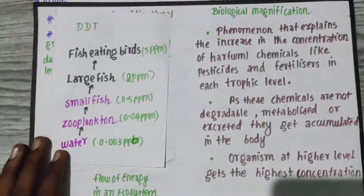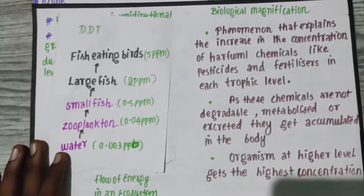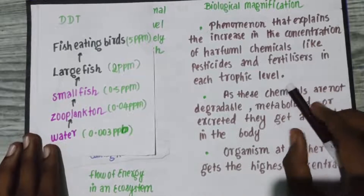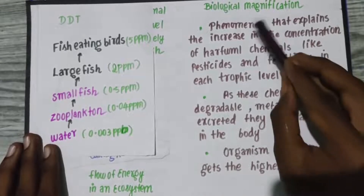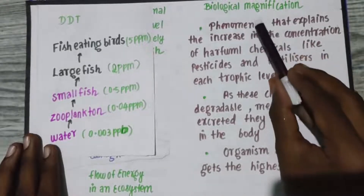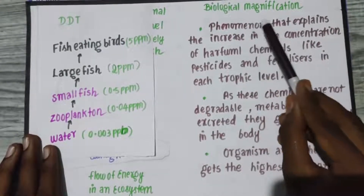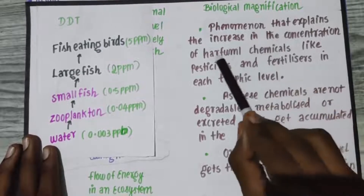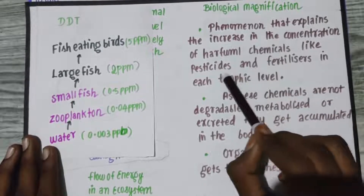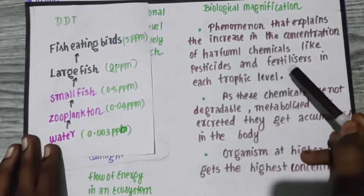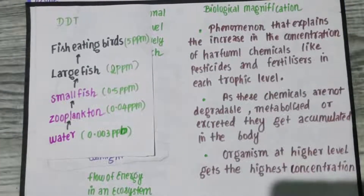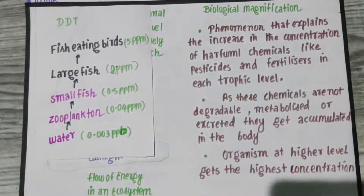Hello students, welcome to Swifto. In this video, let's talk about biological magnification. It is a phenomenon that explains the increase in the concentration of harmful chemicals like pesticides and fertilizers in each trophic level. Now, we use fertilizers.